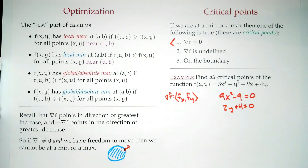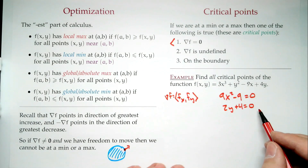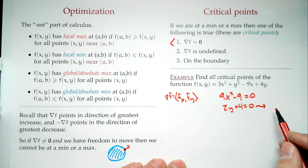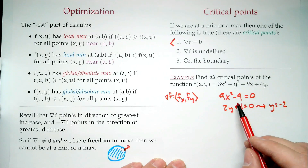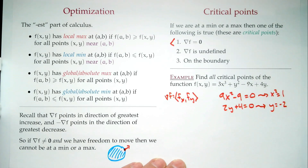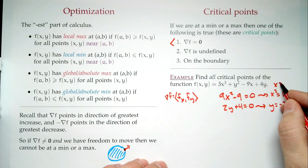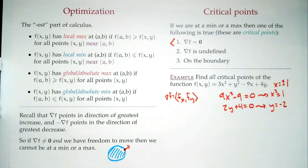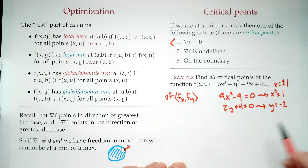We have a system of two equations and two unknowns. Starting with the second: 2y + 4 = 0 gives y = -2. For the first: 9x² - 9 = 0, which means x² = 1, so x = ±1. Remember plus or minus — both are valid solutions.